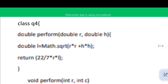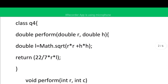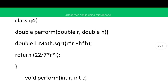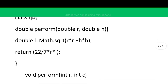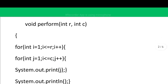Here we only define the methods — there is no main function. So we begin with: double perform(double r, double h). First we calculate the value of l (slant height): Math.sqrt(r*r + h*h). Then we calculate the curved surface area as (22.0/7) * r * l, and since we need to return a value, we use a return statement.